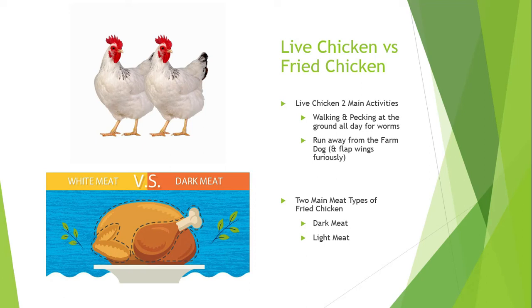The leg is dark meat — these are the muscles the chickens use to walk around and peck at the ground all day. That is one type of muscle fiber. Then you have the breast meat, which is white meat. The breast is the type of meat the chicken uses to run away and flap away from the dog — that furious energy is created using the breast muscle. That is a whole other type of muscle fiber.